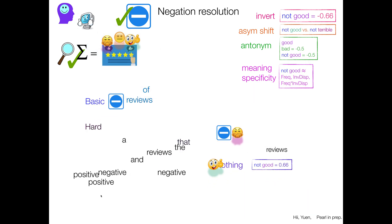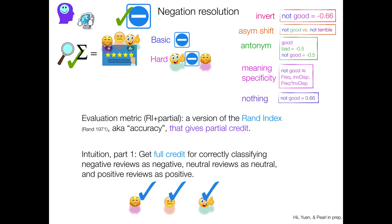So we have these two data sets. And the evaluation metric we're going to use is a random index plus partial credit kind of thing, RI plus partial. It's a version of the random index, also known as accuracy in the NLP community, that gives partial credit. So the first part is your standard random index. You get full credit for correctly classifying negative reviews as negative, neutral reviews as neutral, and positive reviews as positive. That's your standard RAND index.